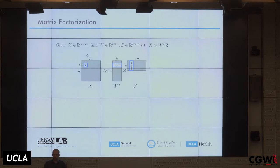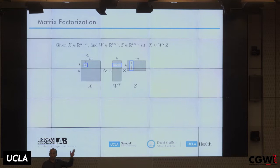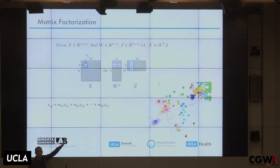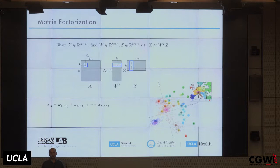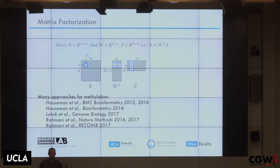Think of one matrix as the cell type composition with, say, K=6 cell types for N individuals, and a wide matrix Z corresponding to the K cell types, where each cell type has a typical methylation pattern. PCA is one example of this kind of matrix factorization, used a lot in population and statistical genetics. There are many others — like non-negative matrix factorization — and in methylation, people have tried dozens or hundreds of different methods.